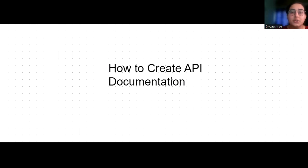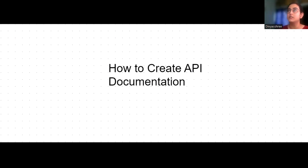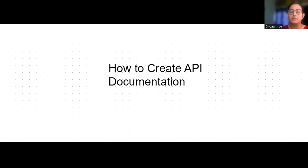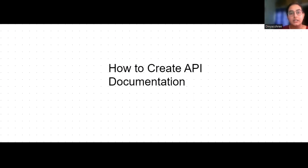Hello guys, in this video we will see how to create API documentation for technical writers who are not familiar with APIs. Think of APIs as basically a contact point between two applications. For example, there is an application that returns your personal information if you've given your Aadhaar number or social security number, and we will call that API 'get my personal information.' Writing API documentation is important because the only way to contact that application and use it is through the documentation or a video tutorial. To learn to use APIs, you need very clear documentation.